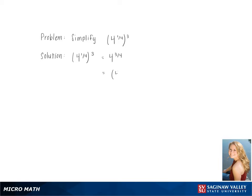Then we separate them, giving us 4 cubed to the 1/4th. 4 cubed simplifies to 64.